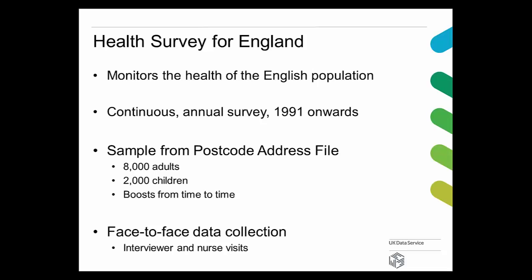The current sample size is around 8,000 adults and 2,000 children annually, though that varies over the years. Some years have boosts to increase the sample size of subpopulations — for example, there was a boosted sample of children in 2002 and an ethnic boost sample in 2004. It's a complex sample design, representative of the population of England. Interviewers conduct face-to-face interviews with all adults within a selected household and up to two children. If participants agree, there's a follow-up visit from a specially trained nurse to collect blood and saliva samples and measurements such as waist circumference.